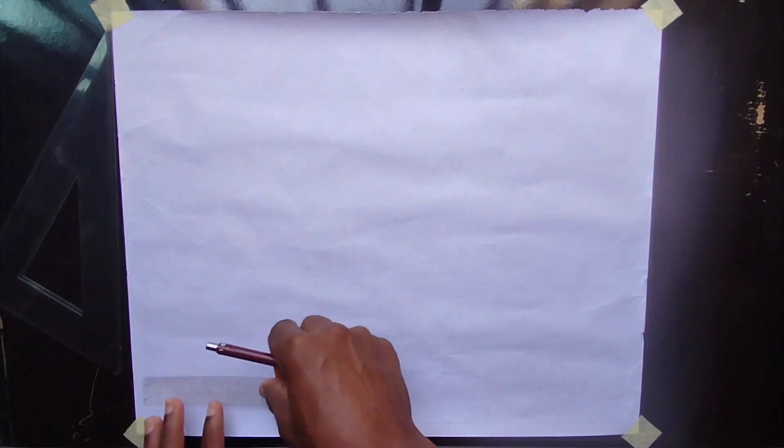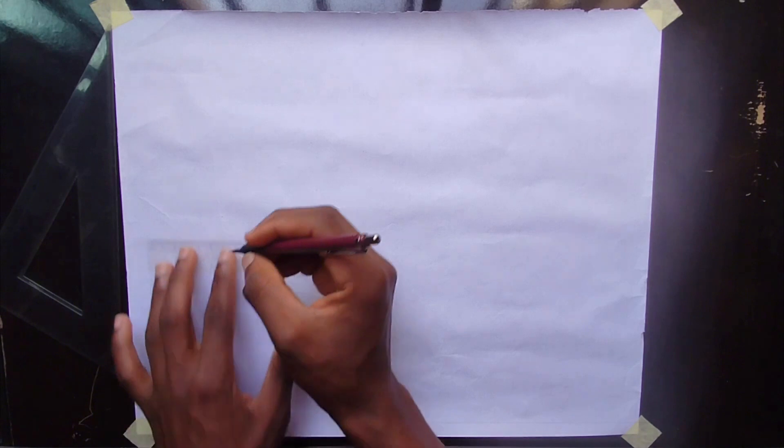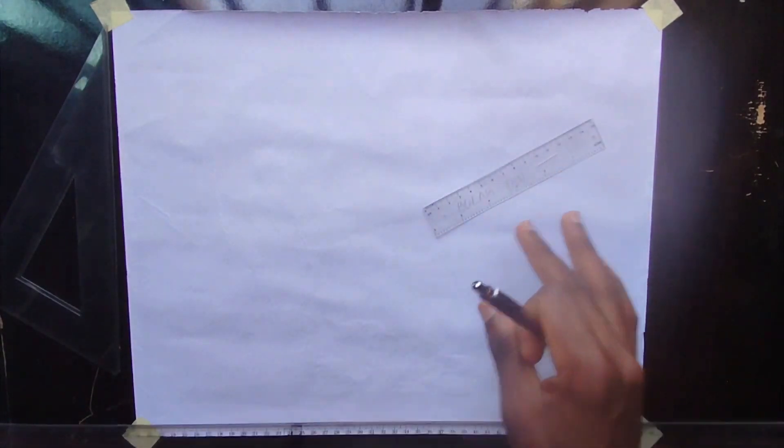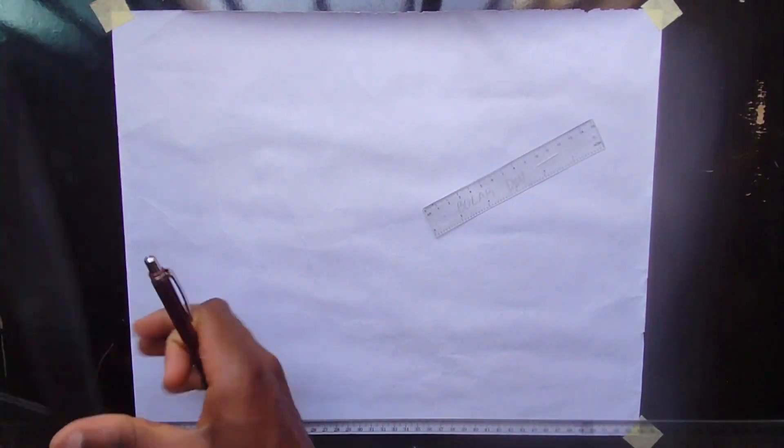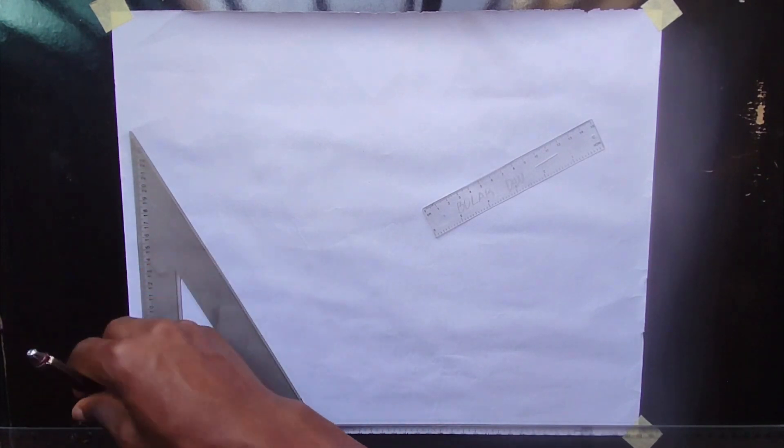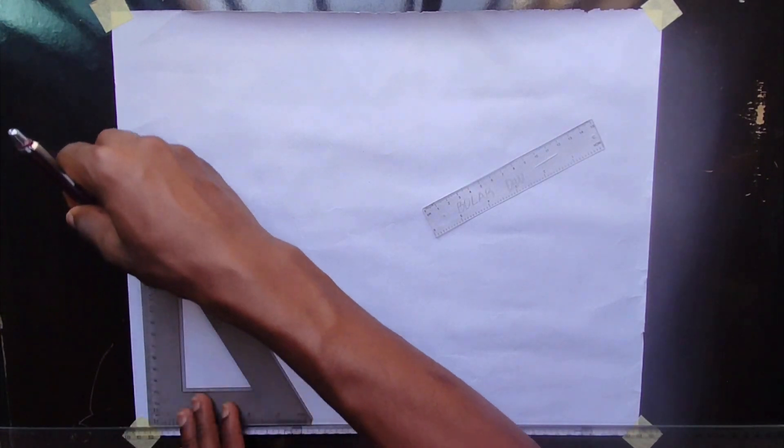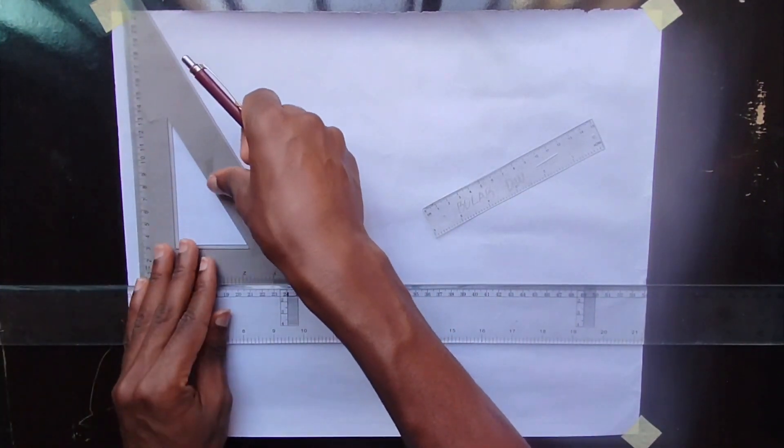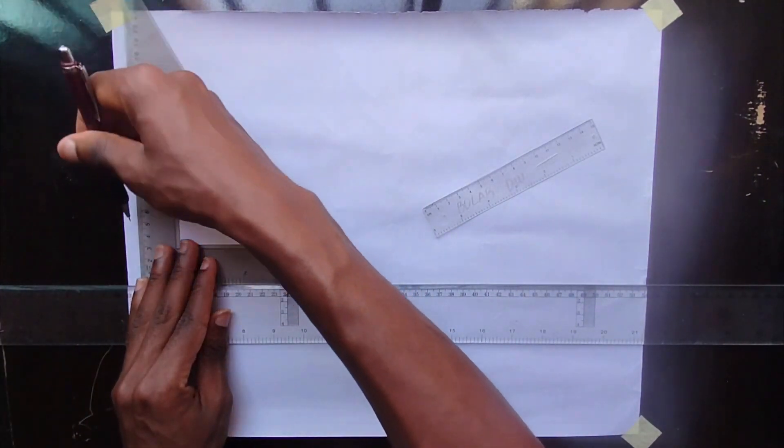Now we pick 10 millimeter from this side also, that's one centimeter or 10 millimeter from here. So with the help of our T-square and our set square, we draw this like this, draw this to the end like this.